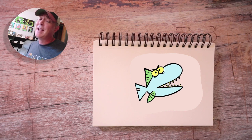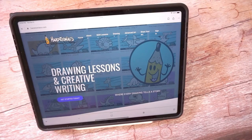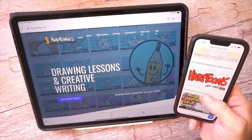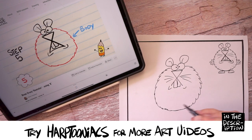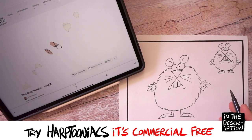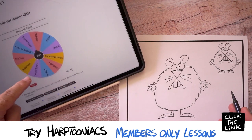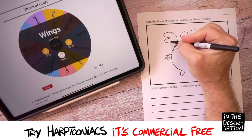Guess what? I have a subscription art site that I want you to check out. I'm inviting you to check out my subscription art site, Harptooniacs. Learn how to draw characters using the step-by-step how-to-draw videos and the drawing worksheets. Then spin the wheel to change, alter, transform, or just to make your character look different.